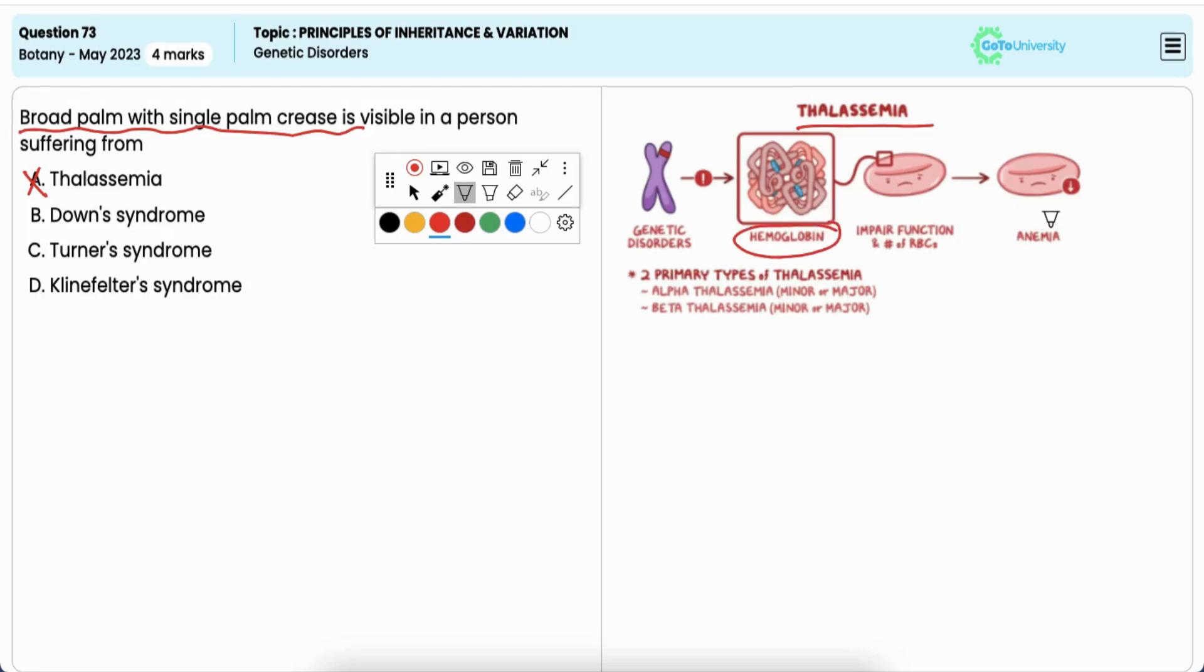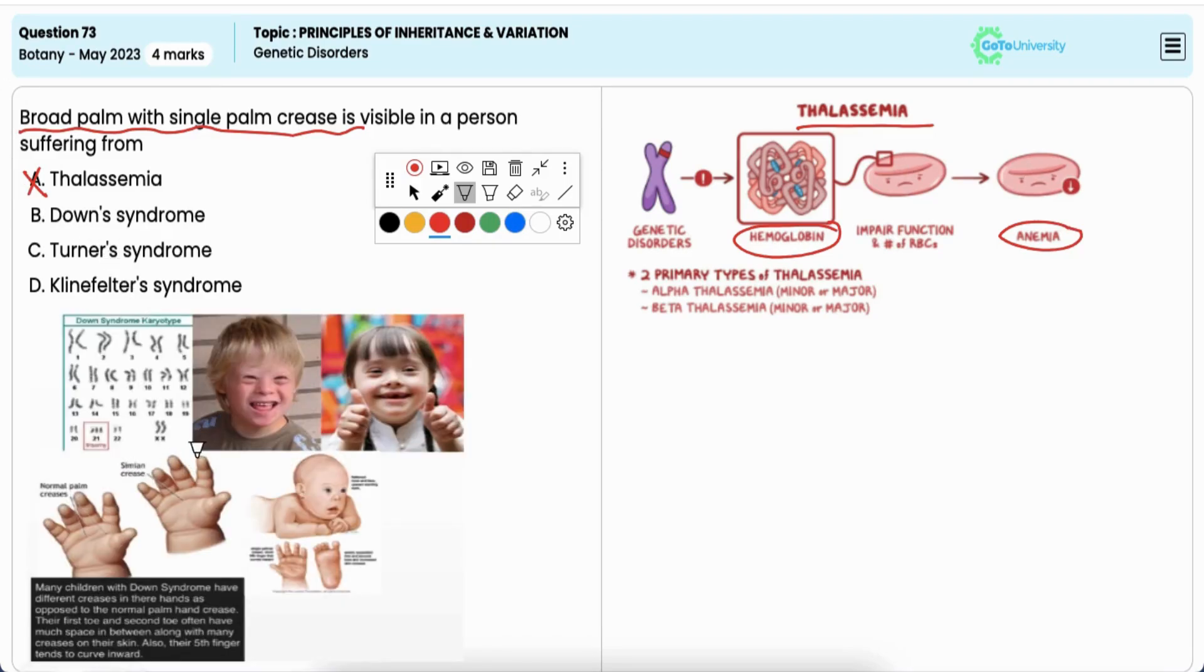Option B, Down syndrome: A broad palm with a single palm crease, also known as simian crease, is a characteristic feature of individuals with Down syndrome. It is one of the physical traits associated with this genetic disorder, which results from an extra copy of chromosome 21, that is, trisomy of chromosome 21. Hence, it is the correct option.